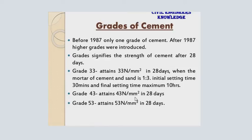Grade 43 cement attains 43 newton per mm² compressive strength. This is 43 newton per mm² at 28 days curing. Grade 53 attains 53 newton per mm² — this is also based on 28 days curing.